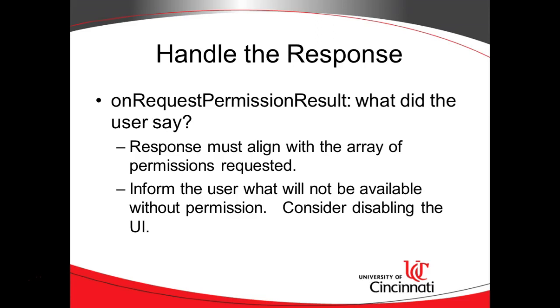Finally, we handle the response. Did the user say yes? Did the user say no? If yes, let's go ahead and enable this functionality. If no, we might want to tell them what has become unavailable, and more importantly, disable any buttons that are now unavailable. If you're asking for camera permission and the user says no, you might want to disable that camera button. That is an overview of permissions. In the next video, we're going to take a hands-on look. I look forward to seeing you there. Thank you.